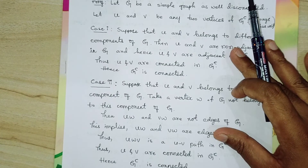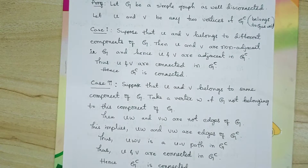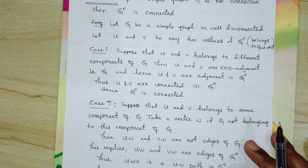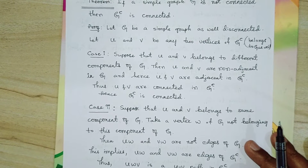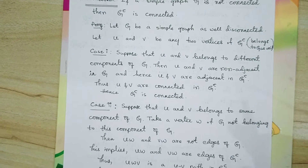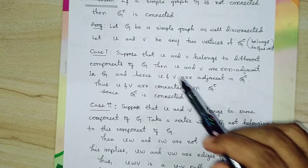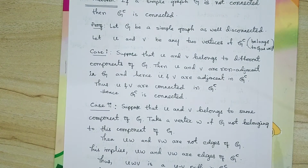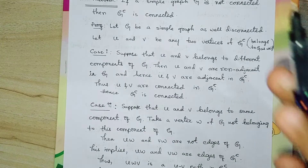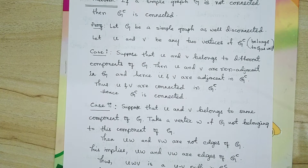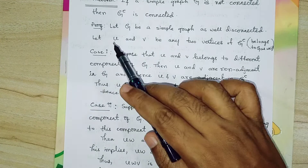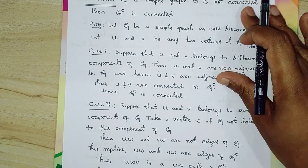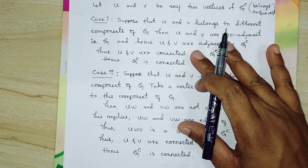Since G is not connected, G has more than one component — it cannot have a single component. So there are two cases: either these two vertices belong to one component of G, or these two vertices belong to different components of G.